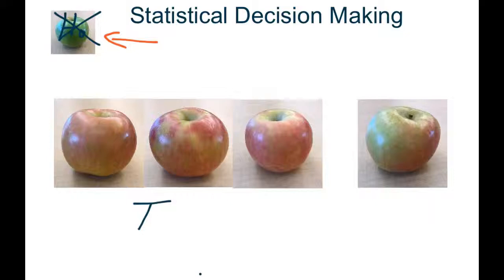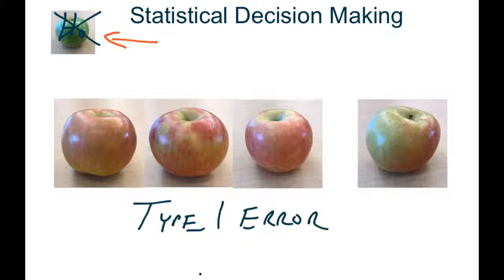A type 1 error occurs whenever you reject the null hypothesis when you should have accepted it. It really does belong to the population, but because it was different, you thought it didn't. You rejected the null, and you made a type 1 error.